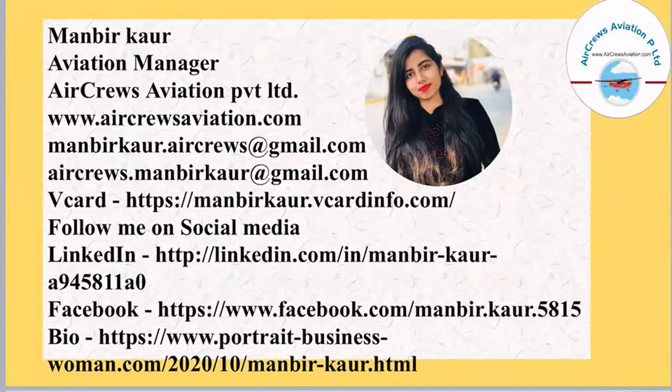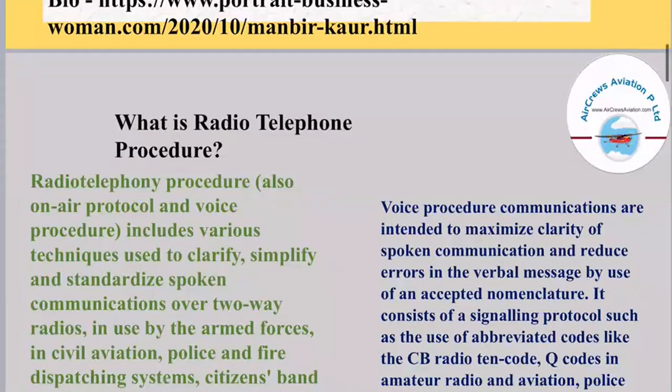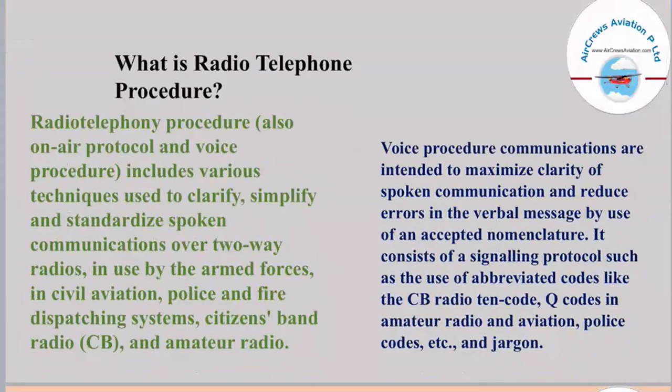So what is basically a radio telephone procedure? Radio telephony procedure is an on-air protocol and voice procedure which includes various techniques used to clarify, simplify and standardize spoken communications over two-way radios, used by the armed forces in civil aviation, police and fire dispatching systems, citizen's band radio and amateur radio. Voice procedure communications are intended to maximize clarity of spoken communication and reduce errors in the verbal message by use of an accepted nomenclature.